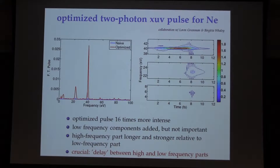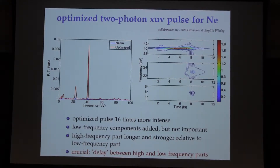This is just a comparison. The question is what does this optimized pulse do better than the naive pulse. First of all, it's more intense — about 16 times more intense — as you can also see from this comparison of the two spectra here.